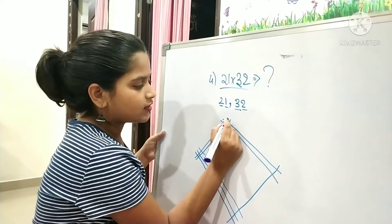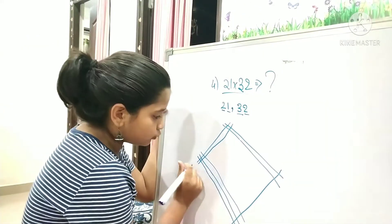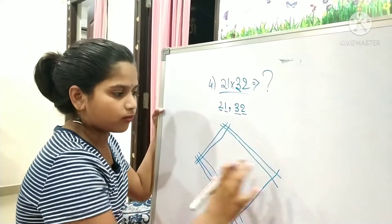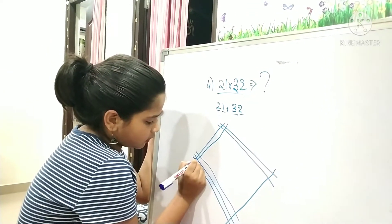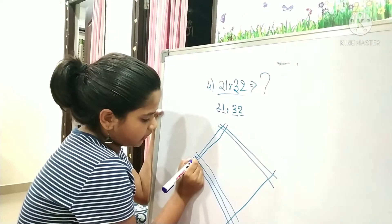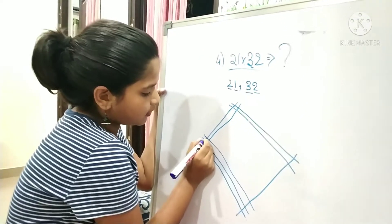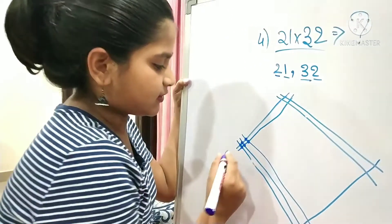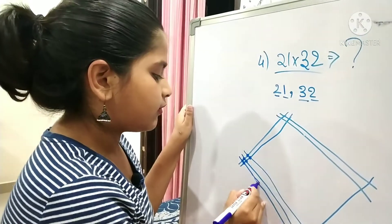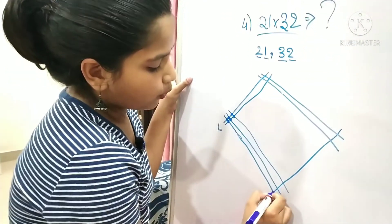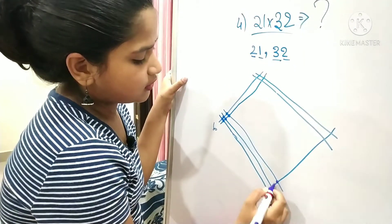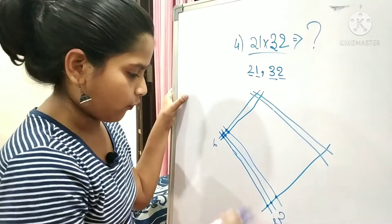You may be thinking, how can this lead to 21 times 32? I have to count how many points are formed in this diagram. One, two, three, four, five, six - so here, totally there are six points formed. Next, one, two, three - here there are three points formed.